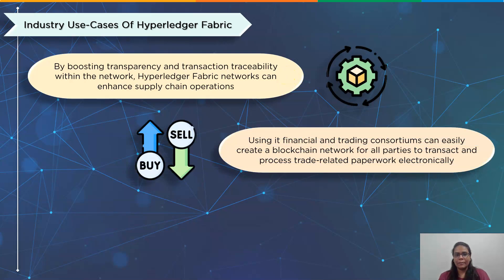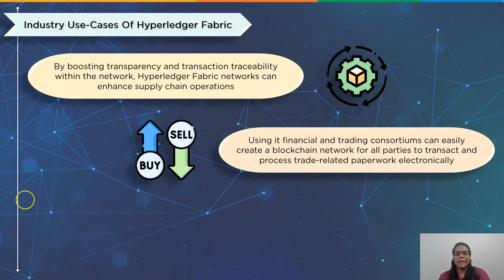The second use case is trading. Importers, exporters, banks, shipping companies, and customs offices are just a few of the many institutions that must collaborate for trade to take place. Financial and trading consortiums can simply build a blockchain network using Hyperledger Fabric where all participants can conduct business and handle trade-related documents electronically, without the need for a central trusted authority. This is in contrast to other processes that require players to exchange trade-related documents back and forth, taking 5 to 10 days to complete.